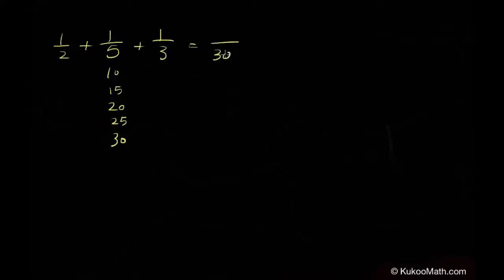One-half with a denominator of thirty is equal to fifteen over thirty. One-fifth is six over thirty. One-third is ten over thirty.